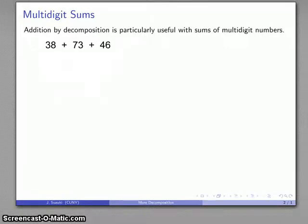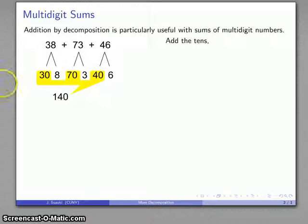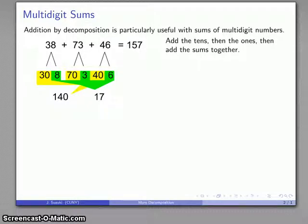Let's consider the sum 38 plus 73 plus 46. Try to do this in your head using whatever method that you want. You'll probably find it's kind of difficult to do that. But if I break these numbers apart into what they are, 38 is 30 and 8, 73 is 70 and 3, 46 is 40 and 6. I can add the tens fairly easily, that's 140. Then I can add the other things together: that's 10, 11, 17. Then I can add the numbers together 140 plus 17, 157.